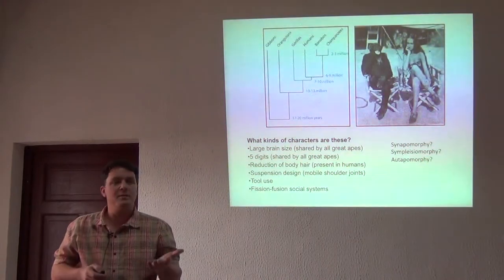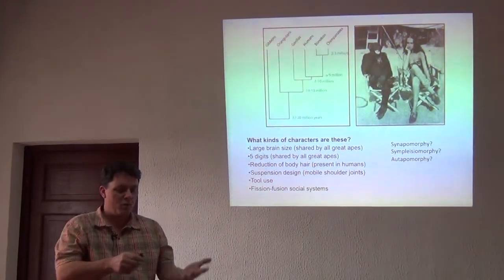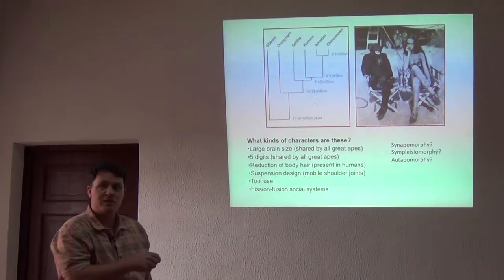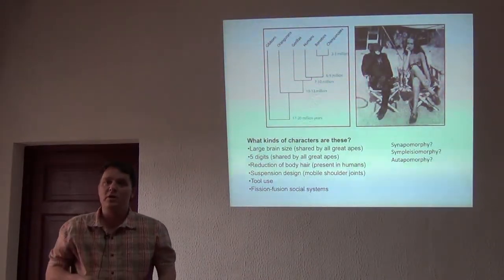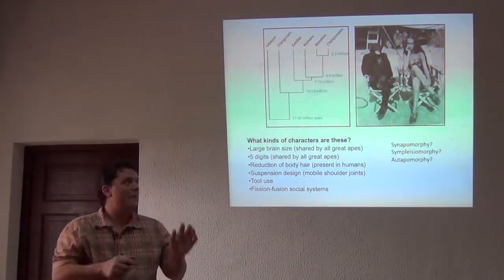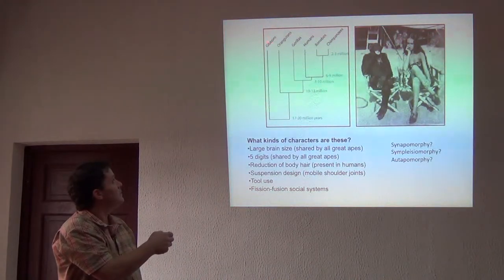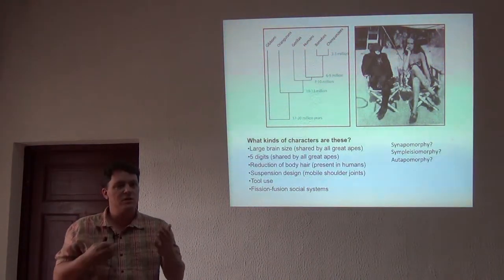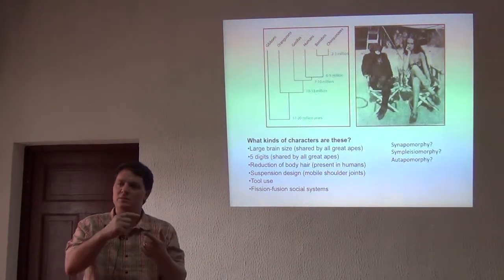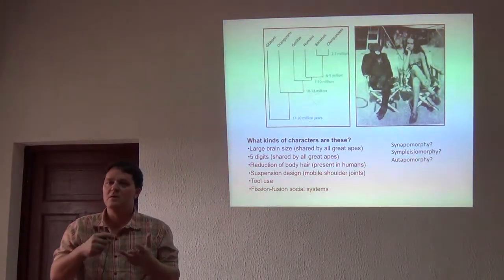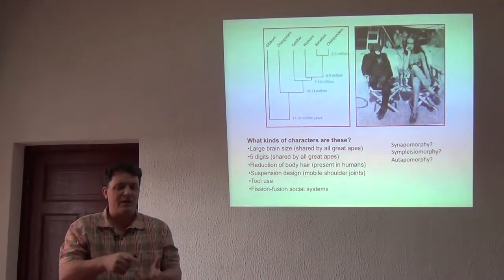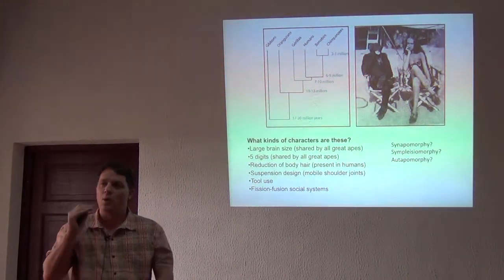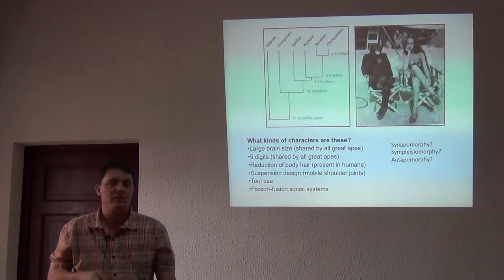It may be a symplesiomorphy — something that evolved earlier and then was lost in a couple of taxa. Or it could be an autapomorphy in gibbons and a synapomorphy in this other group. You can see how, when we make references to symplesiomorphy, autapomorphy, or polyphyly versus paraphyly, it's all with reference to at what level in the tree we're talking about.